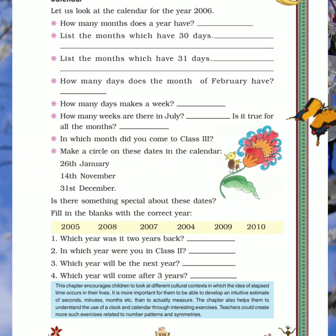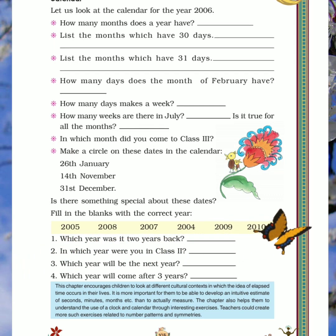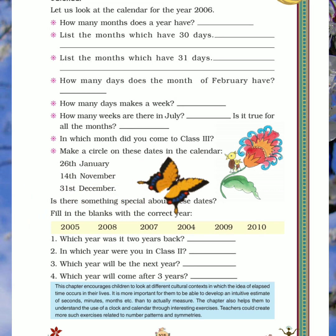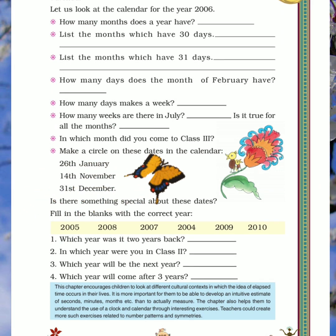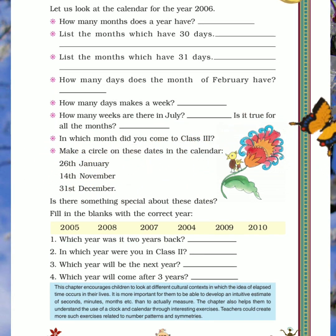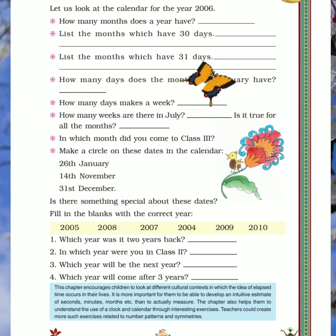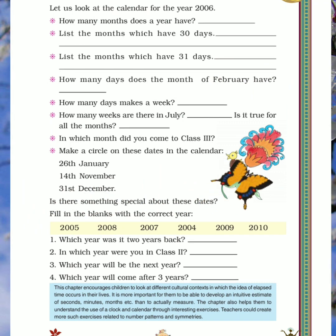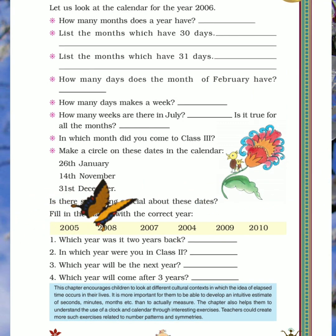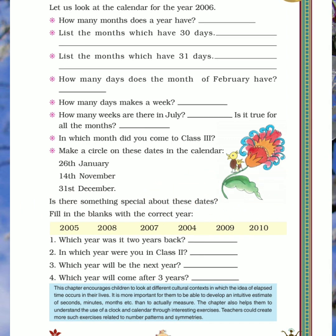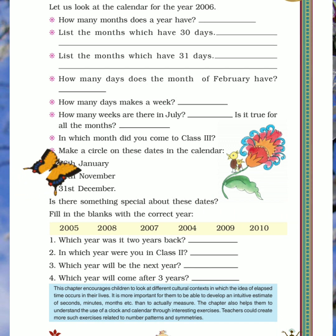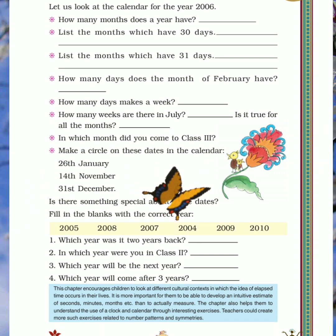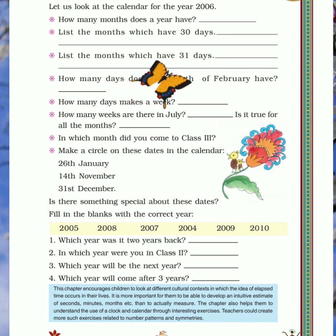In which month did you come to class 3? April hai na? Next: make a circle on these dates in the calendar — 26th January, 14th November, 31st December. Is there something special about these dates? 26th January ko kya hota hai? It's the Republic Day of our nation — hamare desh mein is din Gantantra Divas manaya jata hai. 14th November ko Children's Day celebrate karte hain. And 31st December is the last day of the year — we welcome 1st January.